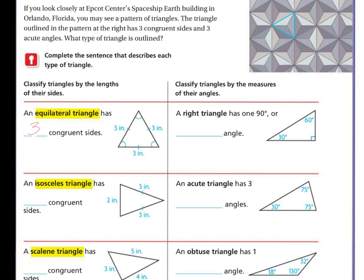Now, an isosceles triangle has two congruent sides and two congruent angles. Here's my angles that are congruent, but this angle is not. A right triangle has one that is 90 degrees. That's this one right here. So, this is a right triangle.